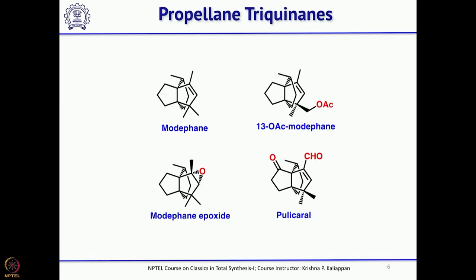Coming to the third type — propellane-type triquinines — the basic diquinine core is almost the same, only the third ring is different. Some of them are oxygenated; for example, modhephene epoxide and polyquinane. The basic one, which is just modhephene, has only a double bond.